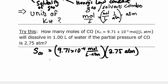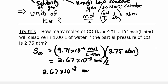So our atmospheres will cancel. And we get 2.67 times 10 to the minus 3 moles per liter. But the question is asking how many moles, and we have 1 liter. So it's going to be times 1 liter, which gives us 2.67 times 10 to the minus 3 moles of CO.